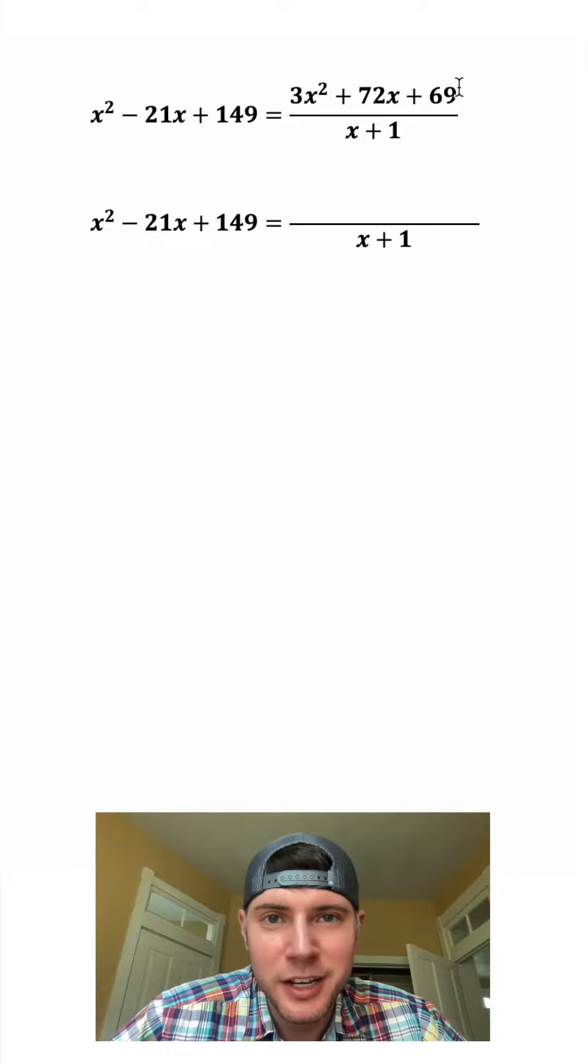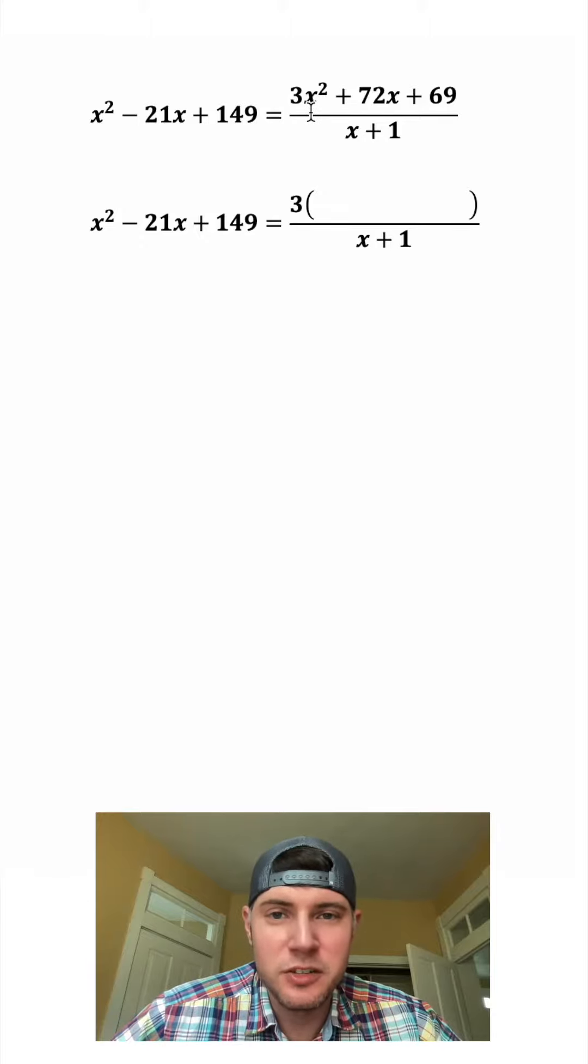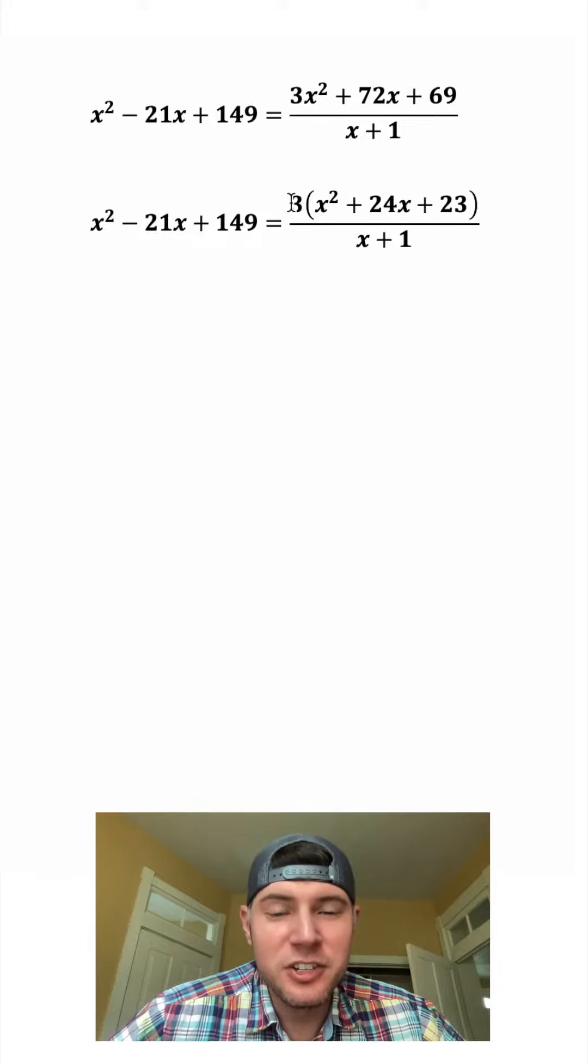Let's copy this stuff down and I want to focus on this numerator on the right hand side. Each of these terms have a common factor of 3, so let's factor out 3. 3 times what gives us 3x squared? That's x squared. 3 times what gives us 72x? That's 24x. And 3 times what gives us 69? That's 23.